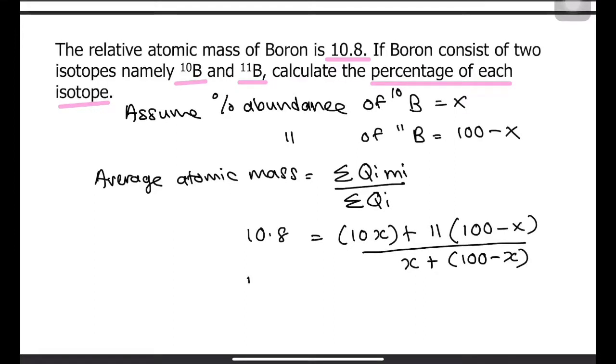After doing your cross multiplications, you should be able to get 1080 equivalent to 1100 minus x, whereby the value of x would be 20.